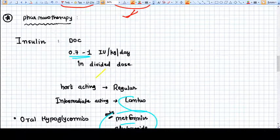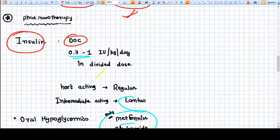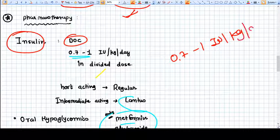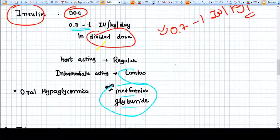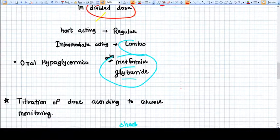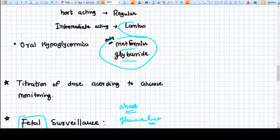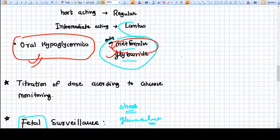How we maintain glucose levels: we use insulin, the drug of choice. The dose is 0.7 to 1 international unit per kg per day in divided doses. We start with this dose, measure glucose, then titrate our insulin dose accordingly. We use two types of insulin: short-acting and intermediate-acting. We also use oral hypoglycemics: metformin and glyburide. Metformin is used more. No other oral hypoglycemic should be used.